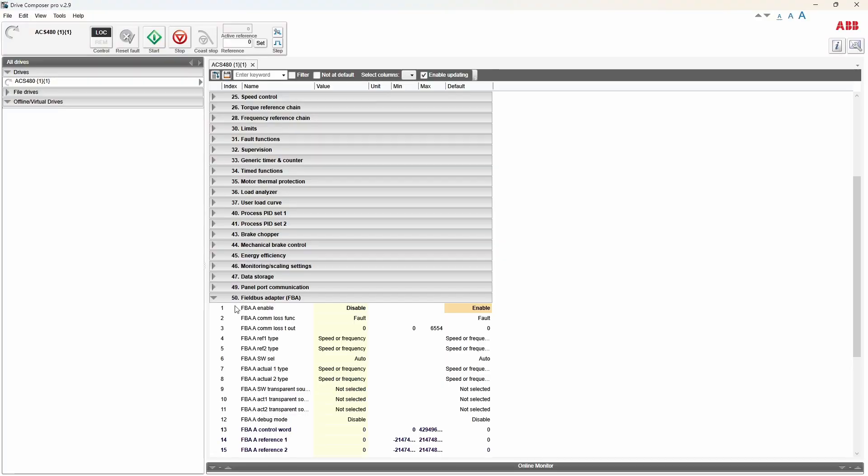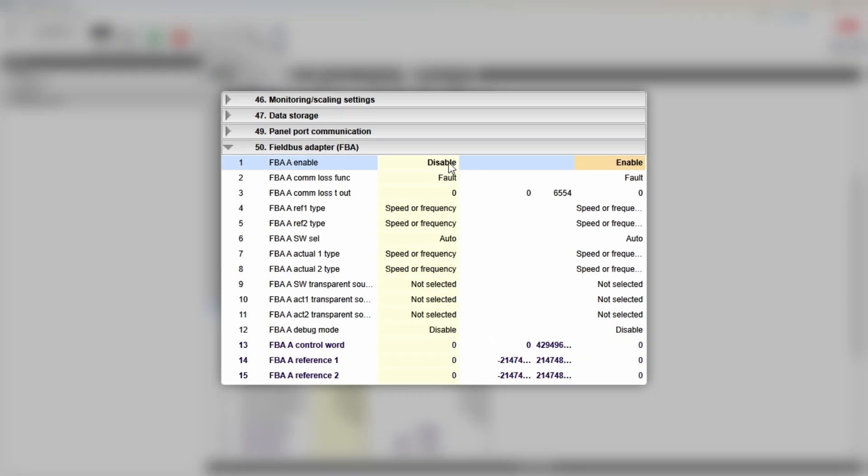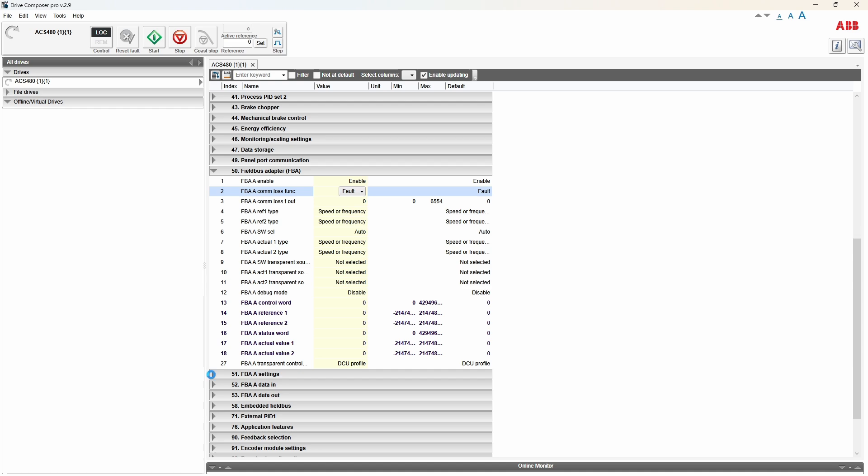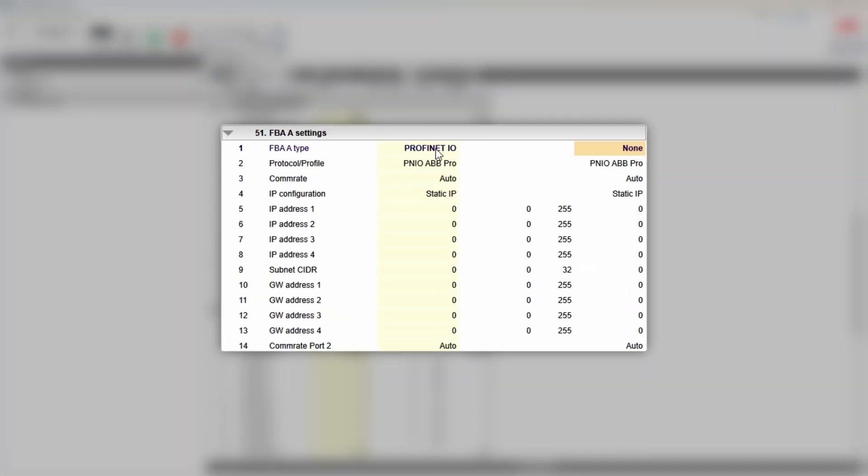So let's go to work and set up the drive first. In Drive Composer software, go to parameter group 50 and enable fieldbus adapter. You also might want to change how the drive reacts to connection loss, but in the majority of cases, default behavior is what you need.